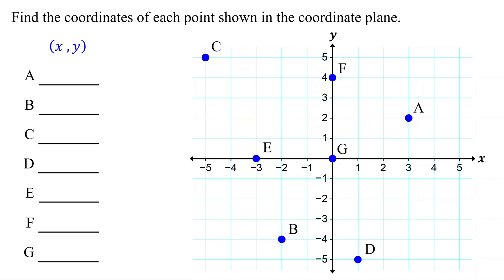Let's see how this works with our examples. To find the coordinates of point A, first move vertically to the x-axis to find its x-coordinate, which is 3. Then, move horizontally to the y-axis to find its y-coordinate, which is 2. Therefore, the coordinates of point A are (3, 2).